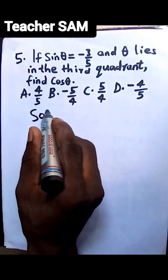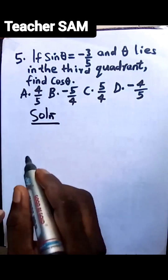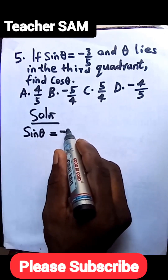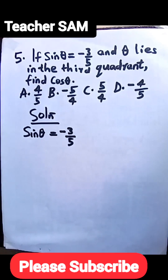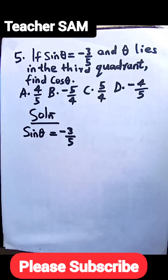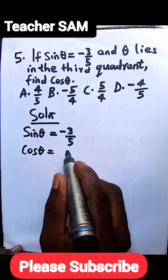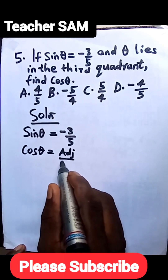Let's get down to business quickly. We are given that sine theta is equal to minus 3 over 5, and we are asked to find cos theta. We are also told that theta is in the third quadrant. Let's first get the value of cos theta, then look at what that means in the third quadrant. From SOHCAHTOA, cos theta is equal to adjacent over hypotenuse.